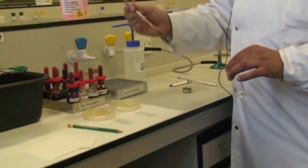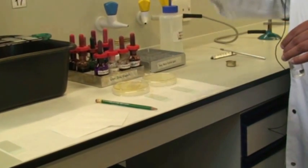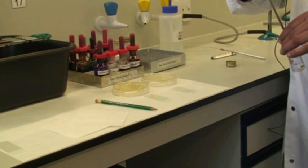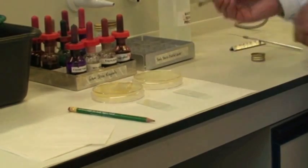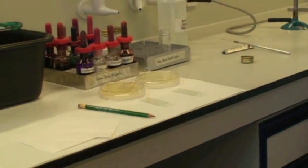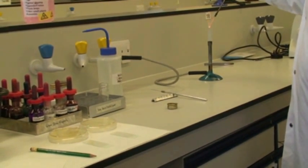So I'm just taking a loopful and transferring it onto that slide, doing the same again and transferring it onto the second slide, and then flaming your bacteriological loop again until it's red hot to sterilize it.